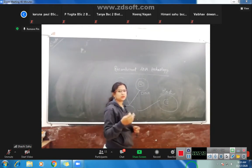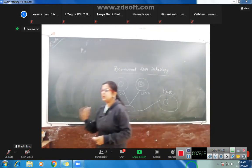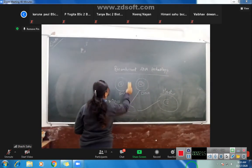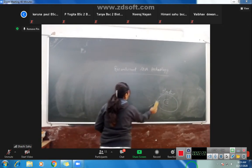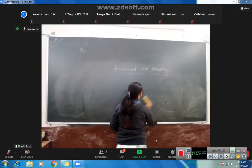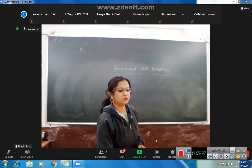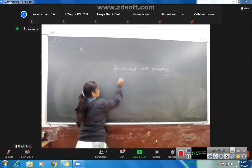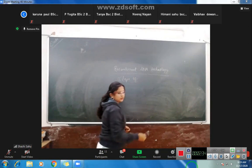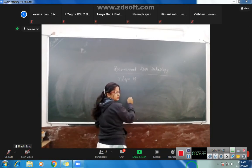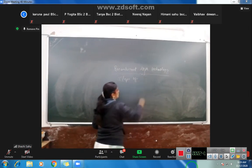Yesterday we read the introductory part, and I am telling you once again so that it will be easier to understand. Today, what are we going to see? If we need to do Recombinant DNA Technology, what are the steps? The steps of Recombinant DNA Technology.